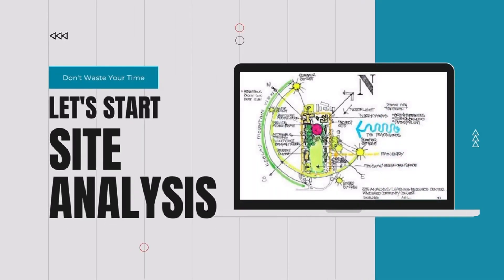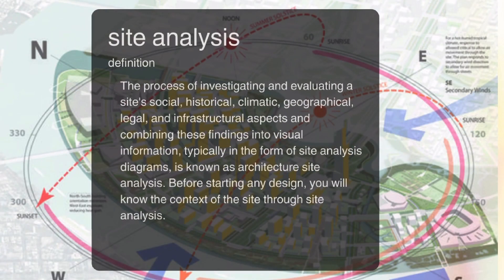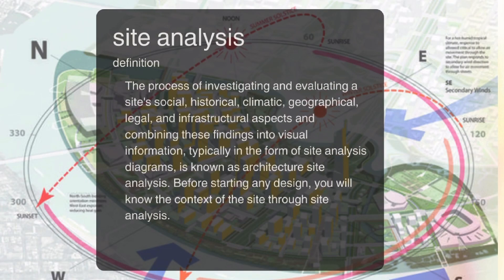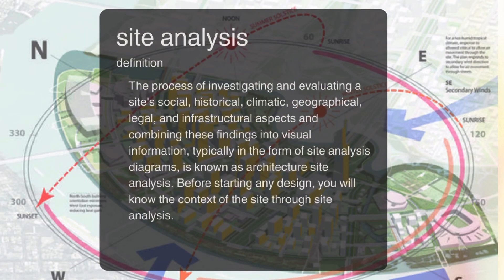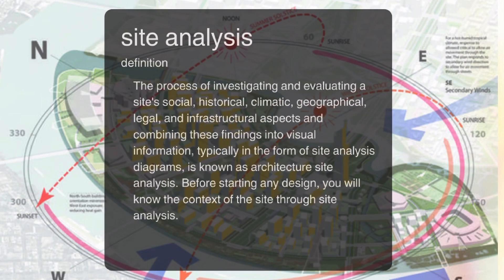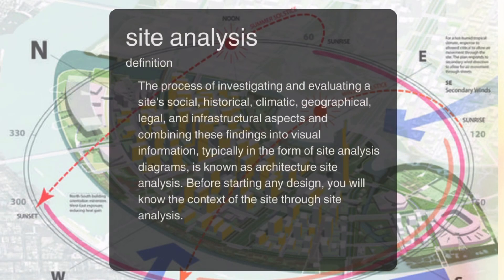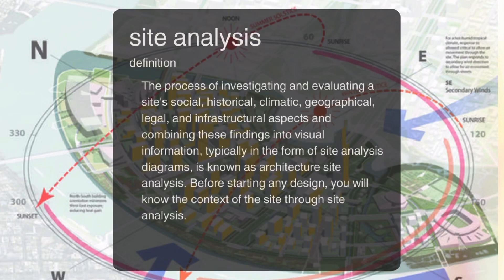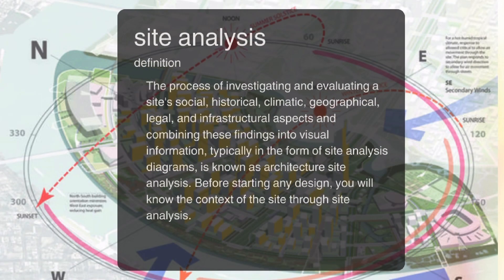Before we jump to the method of doing site analysis, let us discuss what is a site analysis. Basically, the process of investigating and evaluating a site's social, historical, climatic, geographical, legal and infrastructural aspects, and combining these findings into visual information, typically in the form of site analysis diagrams, is known as architecture site analysis.